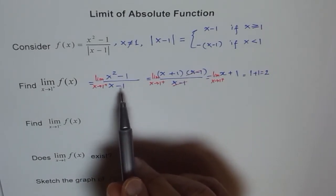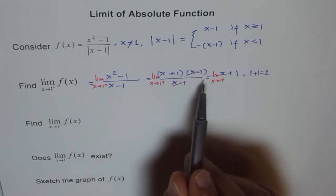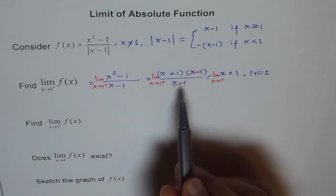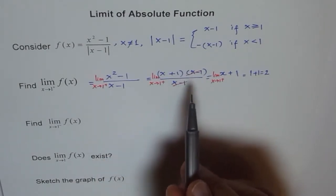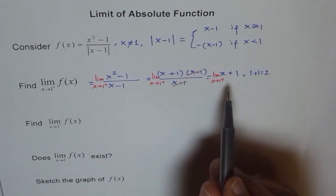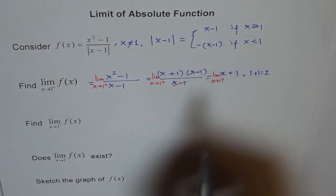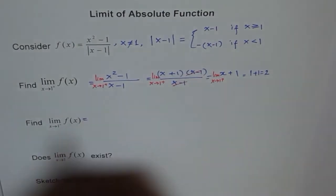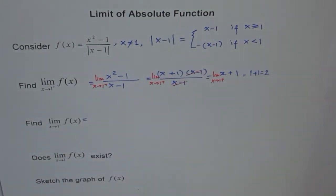When you get 0/0, the strategy is to factor and cancel the common factor in the numerator and denominator, and then substitute. That is why we proceed with factoring. This is just a reminder of that approach.